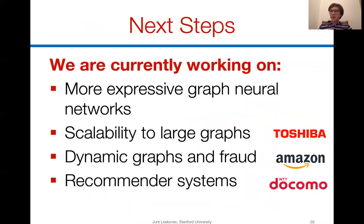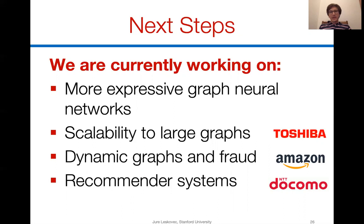Next steps include working on more expressive graph neural networks from a theoretical perspective to build even more accurate models. We are also working with various industrial partners — including Toshiba, Amazon, and Docomo — on scalable large-scale graph neural networks, extending these to dynamic graph structures and self-supervised learning for fraud and anomaly detection, as well as time-series-based recommender systems.